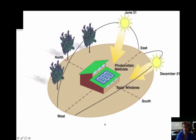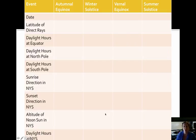Looking at the sun's path for two other dates of the year: for June 21st, we see that the sun reaches its highest angle in the sky in New York. And we can see in December, it's at a much lower angle in the sky. Let's fill in this chart to put together all the information we've learned about the sun's path and the way it affects Earth over the course of the year and for each season.